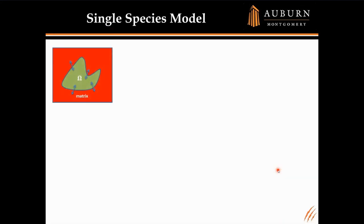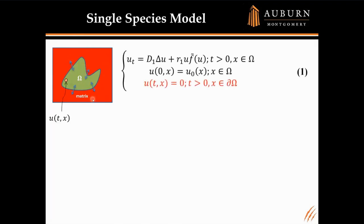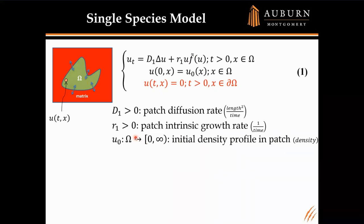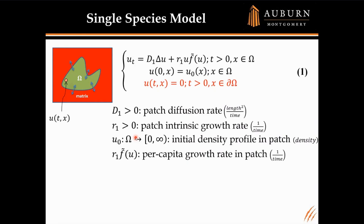For today, we'll be talking about two different kinds of models. The first is a single species model — imagine an island surrounded by a hostile matrix, like an island surrounded by the ocean. At every time t and location x in the patch, we model density u according to a standard reaction-diffusion model with absorbing boundary conditions: no animals can live on the boundary; they're immediately removed. D1 is the patch diffusion rate, R1 is the patch intrinsic growth rate, U0 is the initial density profile, and R1·F̃ is the per capita growth rate. For today I'll look exclusively at logistic growth, where K1 is the patch carrying capacity given in terms of density.